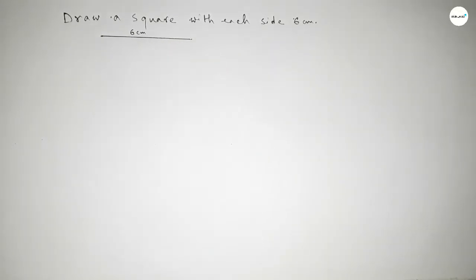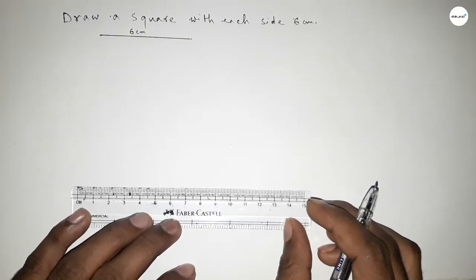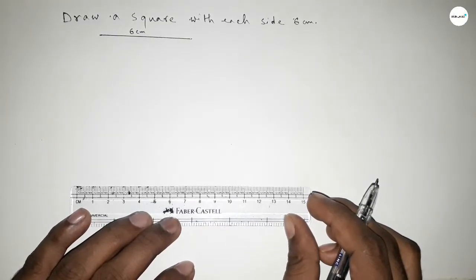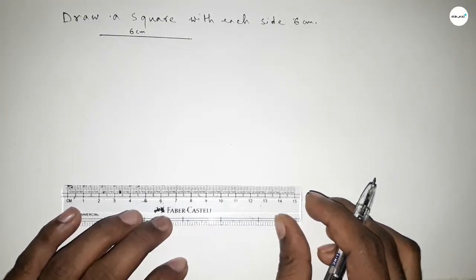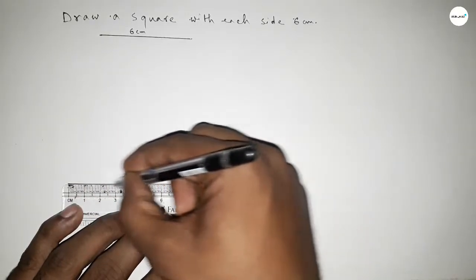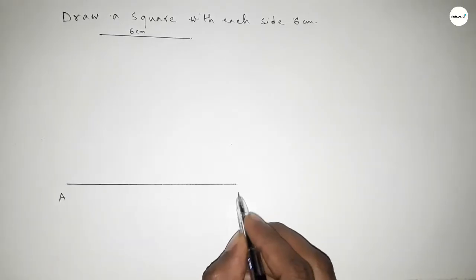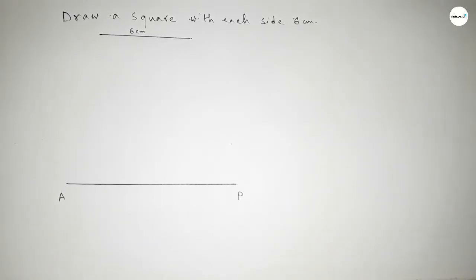Next we have to draw here a line of any length. So drawing here a line of any length, and taking this as A and P. So this is the AP line.